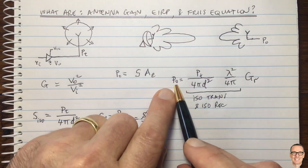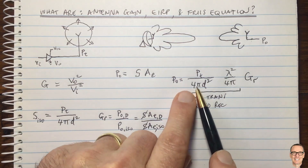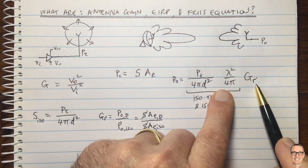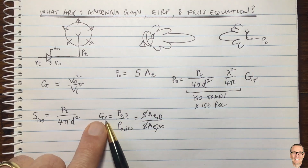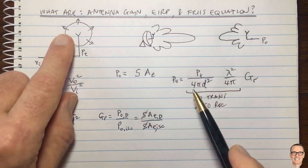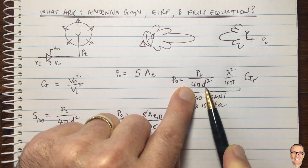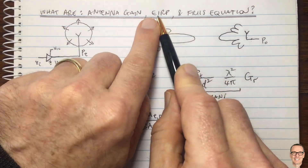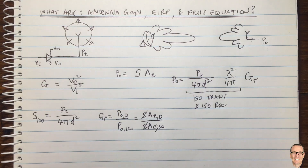So now we have a formula for an isotropic transmitter and a directed receiver: it's the isotropic receiver power times the gain G_R. But what if we don't have an isotropic transmitter? What if we have a directed transmitter? This brings up the concept of EIRP — effective isotropic radiated power.